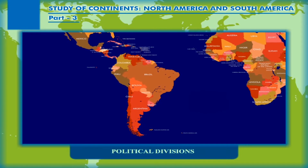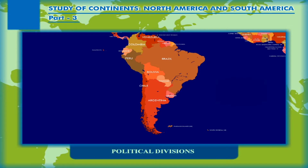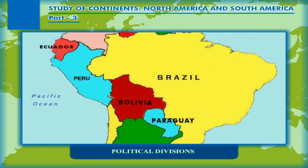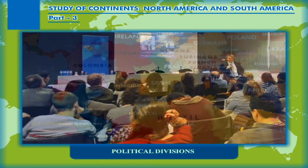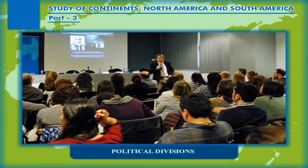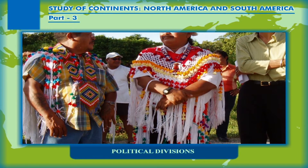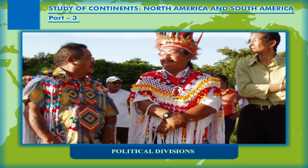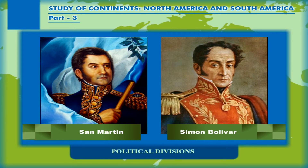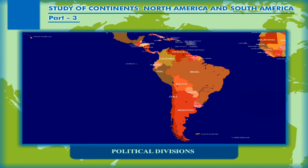South America was exploited by the Europeans for their own benefits. The colonizers monopolized trade and discouraged local industries, leading to widespread unrest and rebellion against the Spanish and Portuguese rulers. In the early 19th century, the colonies except French Guiana became independent under the able leadership of great patriots like San Martin and Simon Bolivar. At present, South America is politically divided into 12 independent countries.